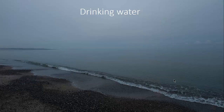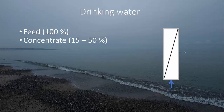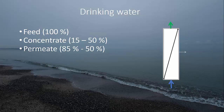Looking at drinking water: the membrane, shown as a black line, separates what we want to remove from what we want in the drinking water. Normally you have a feed of 100% pumped into the membrane. You then need to remove the concentrate, which contains the things you don't want in drinking water. How much concentrate depends on the water source — for a desalination plant it could be as much as 50% concentrate, while for fresh or lake water you might get away with 15%. The permeate stream is what produces your drinking water; the more concentrate, the less permeate.